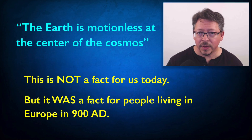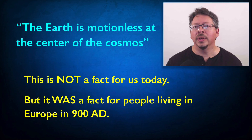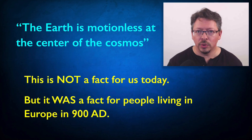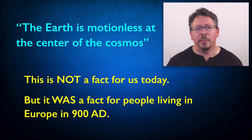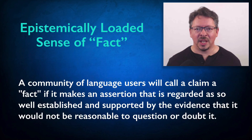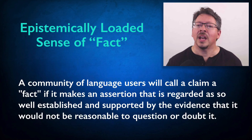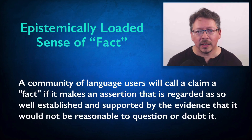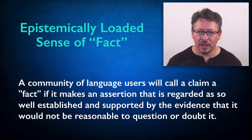This highlights the difference between saying that a claim is a fact in this epistemically loaded sense and simply saying that it's true. We're not saying it was true in 900 AD that the earth was motionless at the center of the cosmos. We're saying that at the time, people believed it was true, and believed it in such a way that it wasn't reasonable to challenge it. So this is the epistemically loaded sense of the word fact — we use it all the time this way, and scientists use it all the time this way. This isn't the only way we use the word fact. In the next video, we'll look at why we also need an epistemically neutral sense of the word fact.